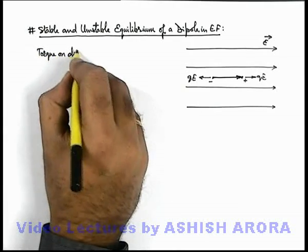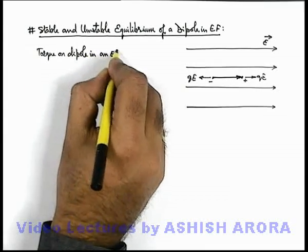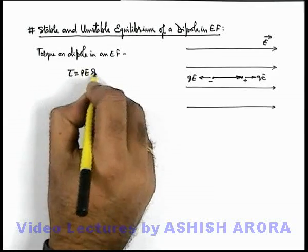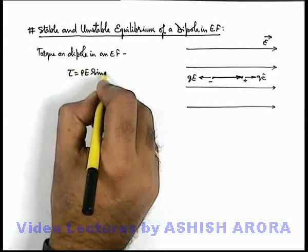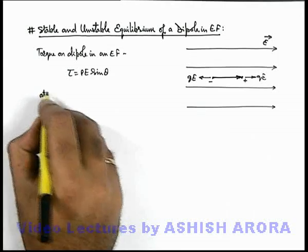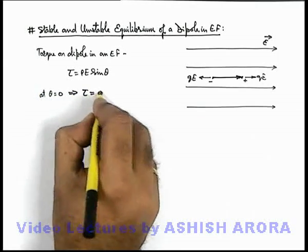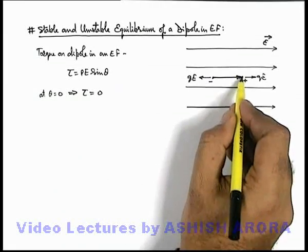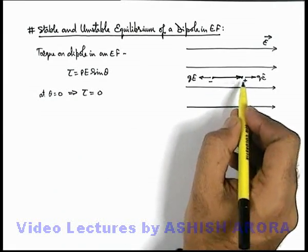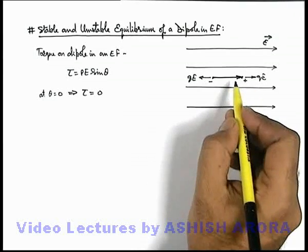The torque on a dipole in an electric field is given by pE sinθ, or vectorially written as p cross E. Here we can see at θ equal to zero, the value of torque is also zero. That means in this situation the dipole is in rotational equilibrium, and as always the net force is zero, so it is also in translational equilibrium.